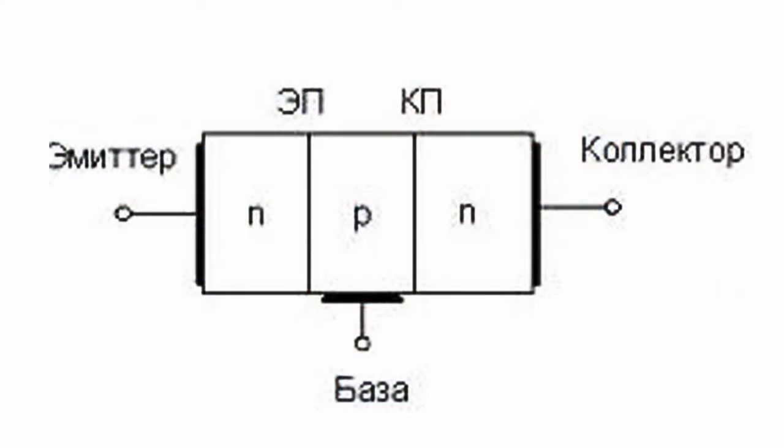The operation mode of a transistor in which the collector junction is forward biased and the emitter junction is reverse biased is called the inverse mode.